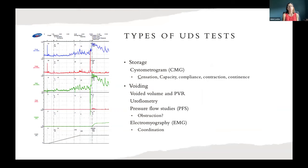There are two phases of urodynamics that are important. One is the storage phase — the cystometrogram — where we fill the bladder and record the patient's sensation to void, bladder capacity, how compliant the bladder is to filling, how well contraction is, and if patients leak or have continence issues. The second phase is the voiding phase, where we can see how much the patient has voided, what is left in the bladder, and how much pressure is required to empty the bladder — that's the pressure flow study.